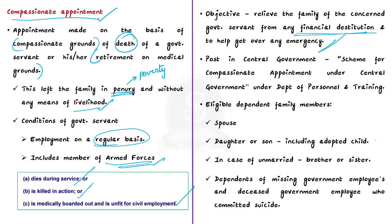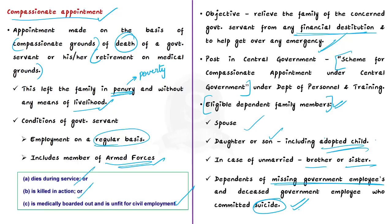Appointments on compassionate grounds against central government posts are regulated by the Scheme for Compassionate Appointment under Central Government, issued under the Department of Personnel and Training. The appointment is given to eligible dependent family members — spouse, daughter or son (including adopted), or brother or sister if the servant was unmarried. Dependents of missing government employees and dependents of a deceased government employee who committed suicide are also eligible for compassionate appointment.